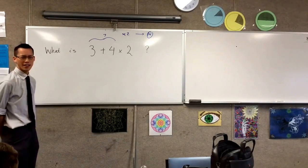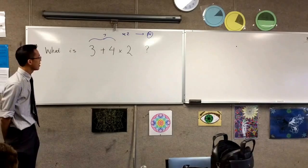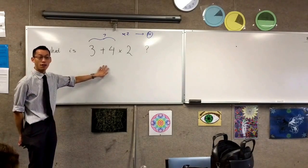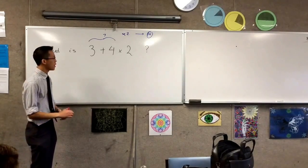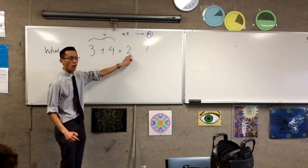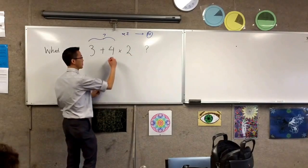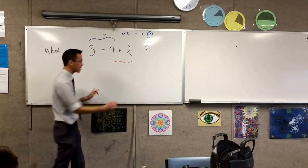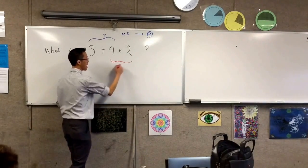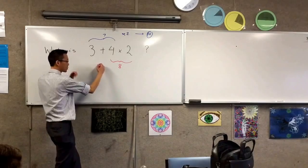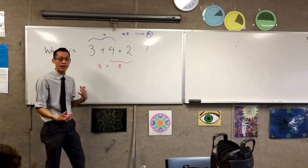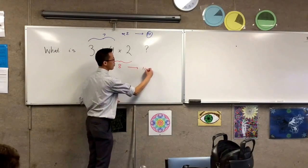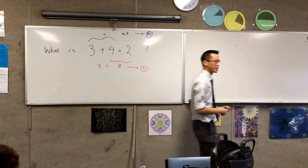Now if I look at it another way and say, maybe I shouldn't add the 3 and the 4 first. Maybe I should multiply the 4 and the 2 first. 4 times 2 is 8. If you say 3 plus 8, you get 11, which is somewhat different to what I got in the first place.